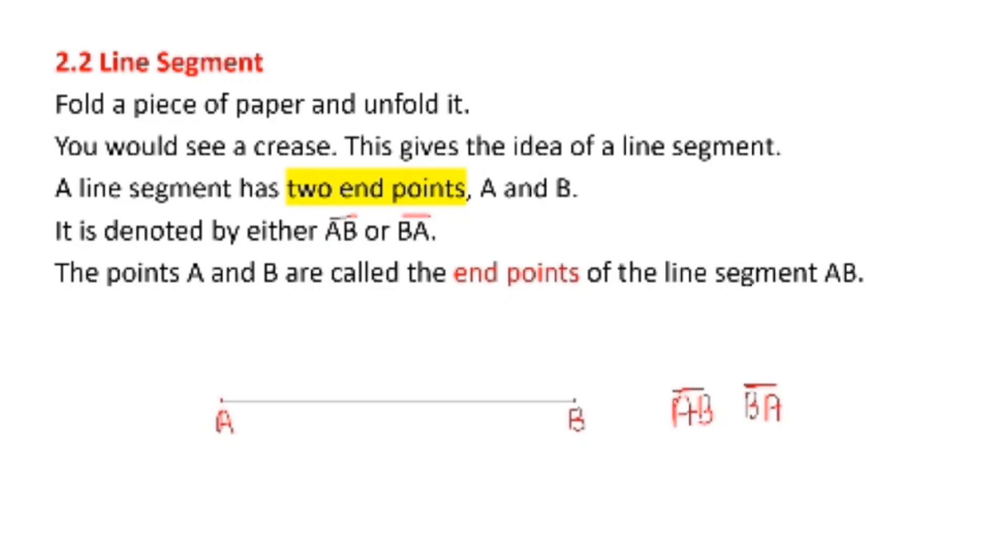The points A and B are called the end points. So here we have A and B and these are called the end points of the line segment AB.